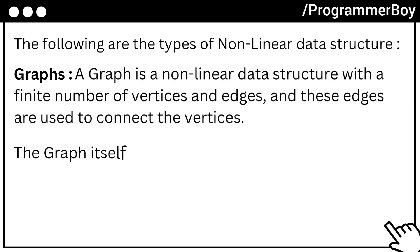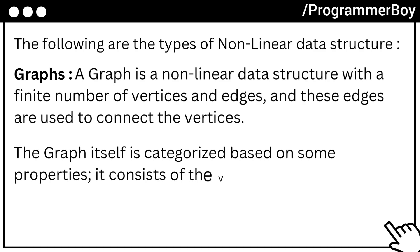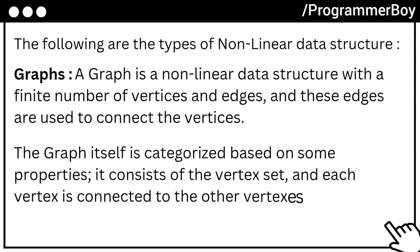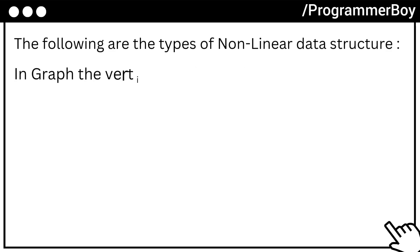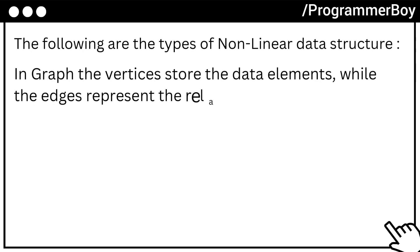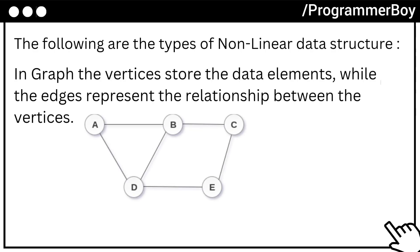The graph itself is categorized based on some properties. It consists of the vertex set, and each vertex is connected to the other vertices having an edge between them. In graph, the vertices store the data elements while the edges represent the relationship between the vertices.